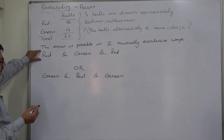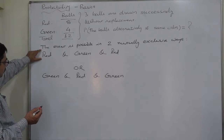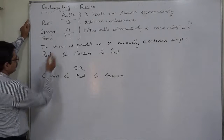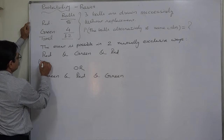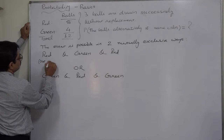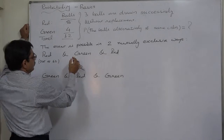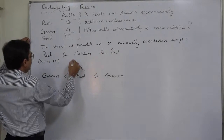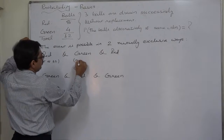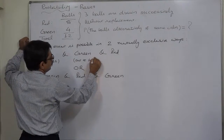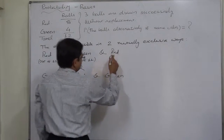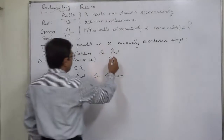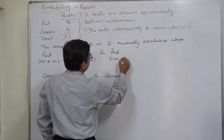Suppose the event happens in the first way — Red-Green-Red. The first red ball will be drawn from 8 red balls out of a total of 12. This ball is not replaced, so the green will be drawn from 4 out of the remaining 11. And lastly, the third ball is red, drawn from 10.